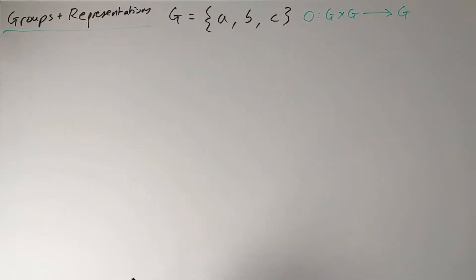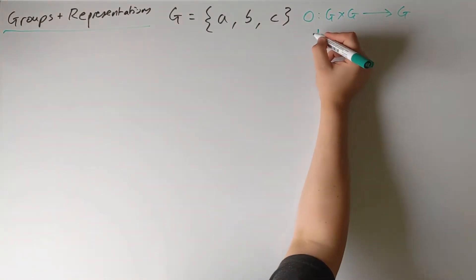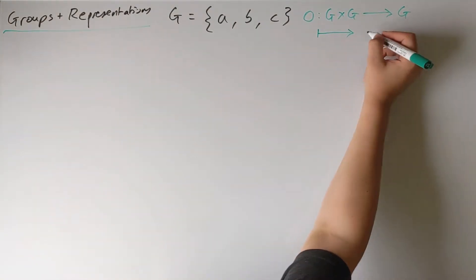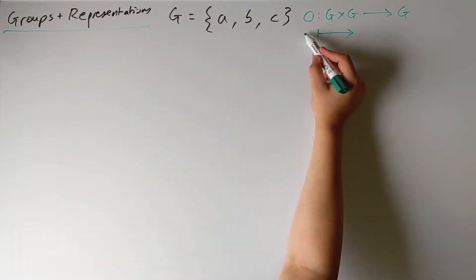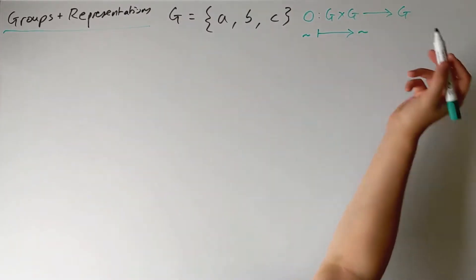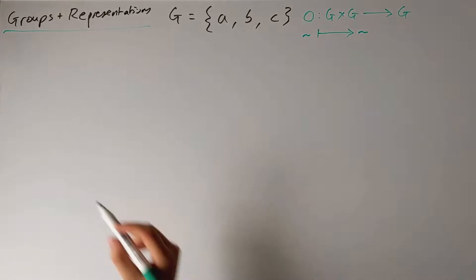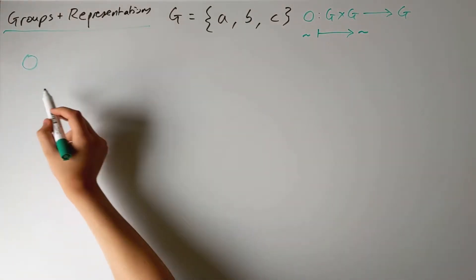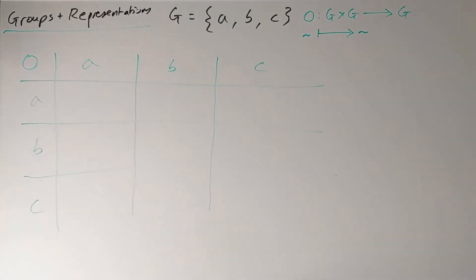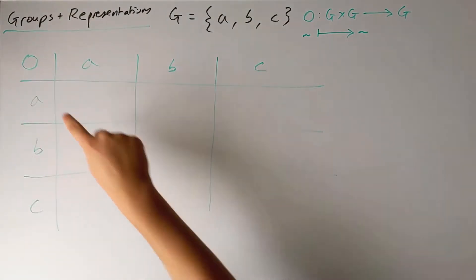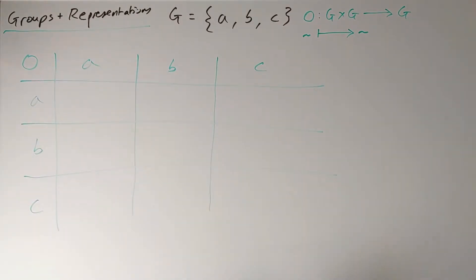Well, in principle we would need to show how it acts on every single element in the group. This would be an element and this would be an element in the group. So a convenient way to represent this is using the following table, which we use to define how this composition operation acts on each element.